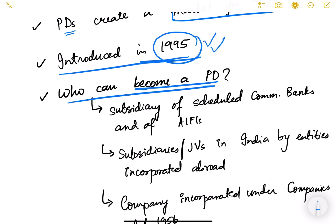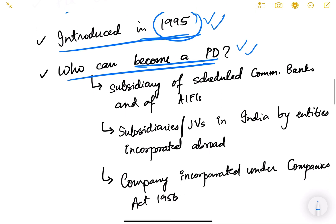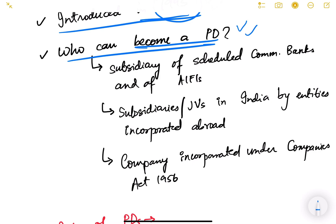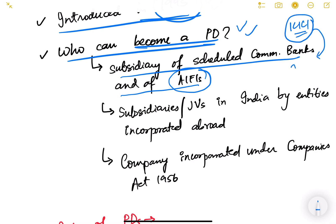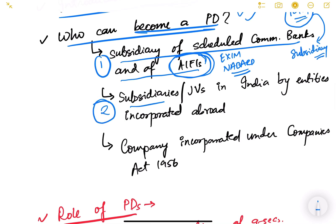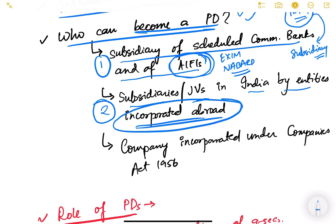What is the eligibility criteria to become a primary dealer? There are three criteria. First, it can be a subsidiary of a scheduled commercial bank or an All India Financial Institution. For example, if ICICI Bank has a subsidiary company, that company can get a license as a primary dealer. Similarly, a subsidiary of NABARD or EXIM Bank can also become a primary dealer.